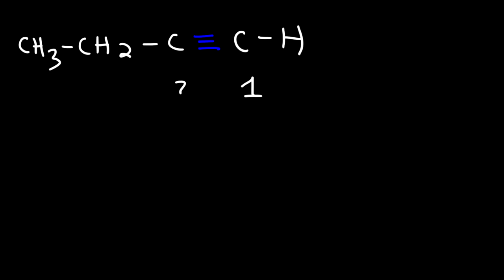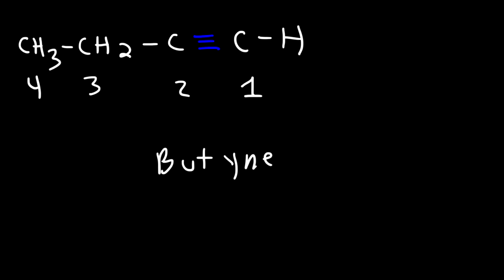This is carbon 1, 2, 3, 4. So 4 carbons is associated with butane, but instead of writing butane we're going to write butyne. Now the triple bond is on carbon 1, so this is called 1-butyne.